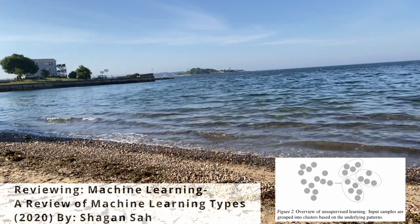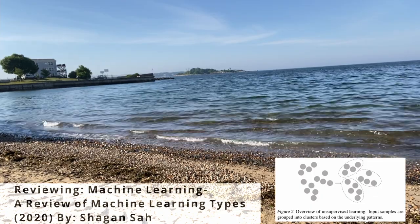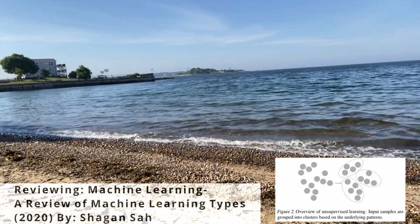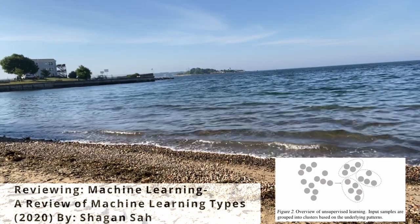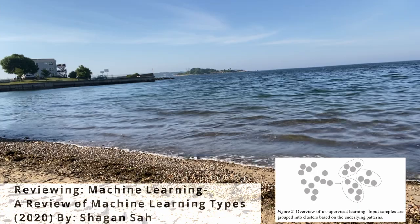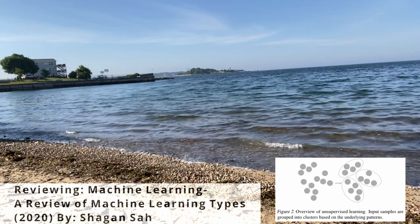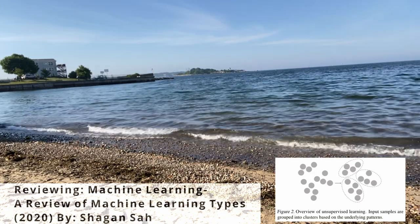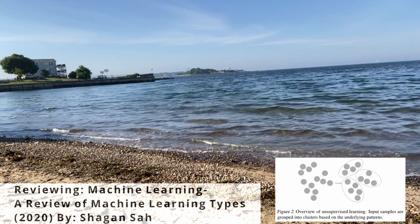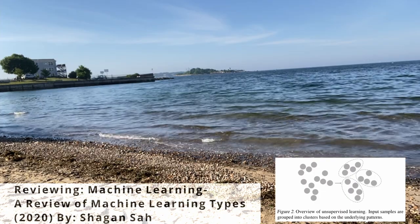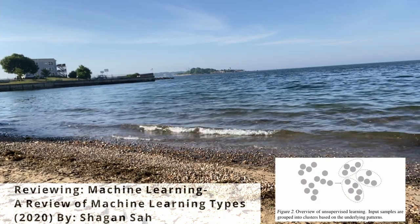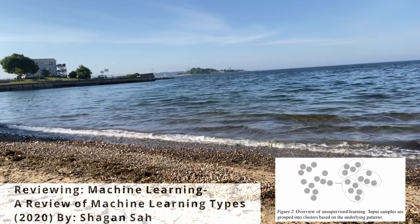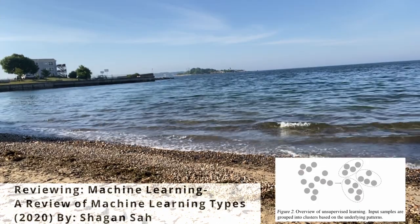Oftentimes this is done with clustering. My favorite is k-means clustering, but there are plenty of other ways that you can cluster like-minded things together. So in this case it might understand that cats and tigers are similar because they both have whiskers and tails and purr, whereas dogs and wolves maybe are a little bit different because of the characteristics that they share.